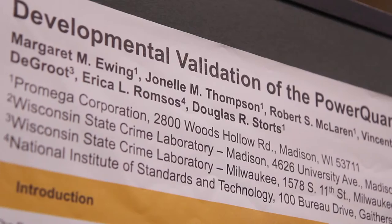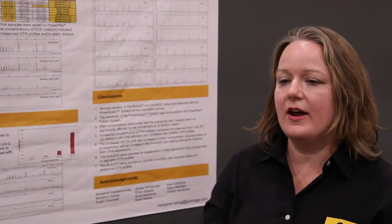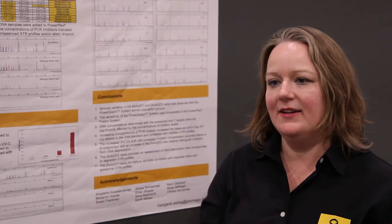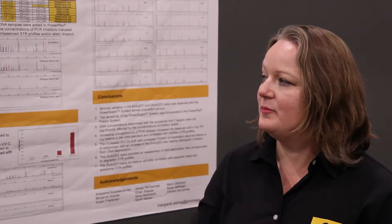This is a poster about the developmental validation of PowerQuant. It is a four-target quantitation system. There's an autosomal target for total quantification of your sample, a Y target to quantify the amount of male DNA in your sample, a degradation target used to assess the integrity of your DNA, as well as an IPC that helps evaluate whether PCR inhibitors might be present.